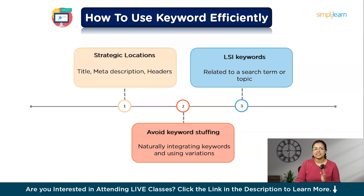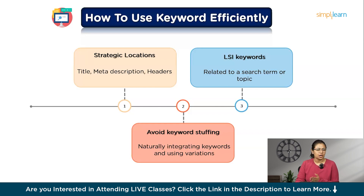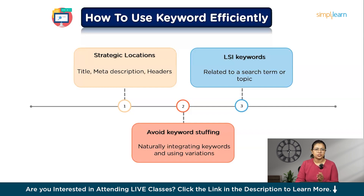Keyword research is not a set-it-and-forget-it process — it requires regular monitoring and adjustment. SEO is a constantly evolving field and what works today might not work tomorrow. Make it a habit to regularly check how your keywords are performing. Use tools like Google Analytics to track your rankings and see which keywords are driving the most traffic. If certain keywords are underperforming, consider tweaking your content or trying out new keywords. By staying on top of your keyword strategy, you can ensure your content continues to perform well and adapt to changes in search trends.